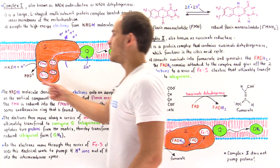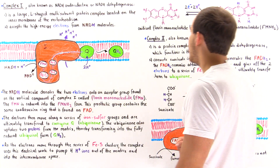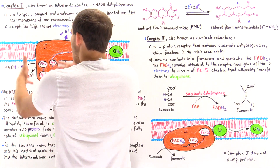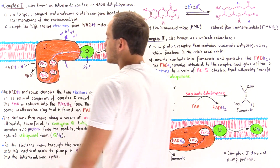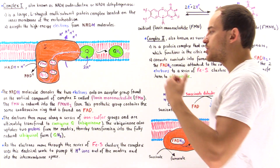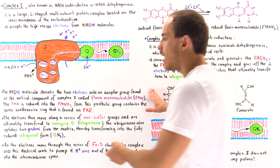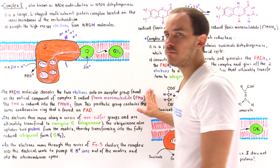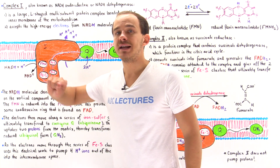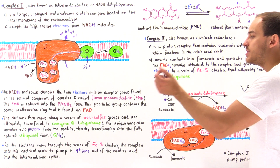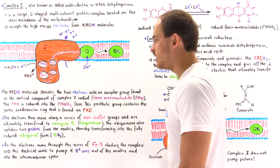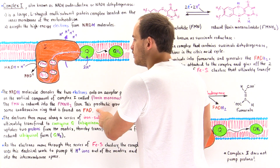We ultimately oxidize the NADH into NAD+ and form FMNH2. This takes place on the matrix side of complex 1. The NADH molecule donates its two electrons onto flavin mononucleotide on the vertical component of complex 1. The FMN is reduced into FMNH2, and this prosthetic group contains the same isoalloxazine ring found on the FAD molecule.